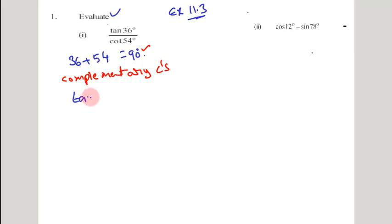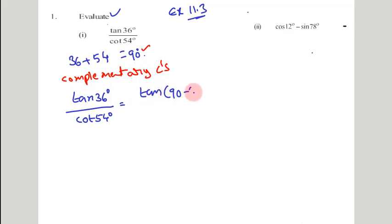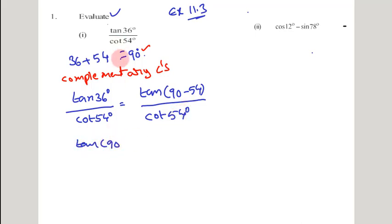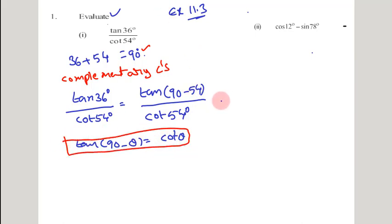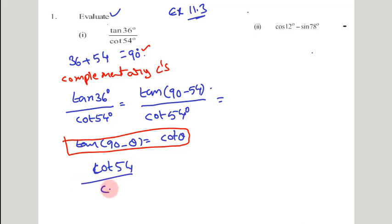We have tan 36 degrees divided by cot 54 degrees. I want to write tan 36 degrees as tan of (90 minus 54) degrees, divided by cot 54 degrees. We know that tan(90 minus θ) can be written as cot θ. Using this formula, the numerator tan(90 minus 54) degrees can be written as cot 54 degrees, divided by cot 54 degrees.